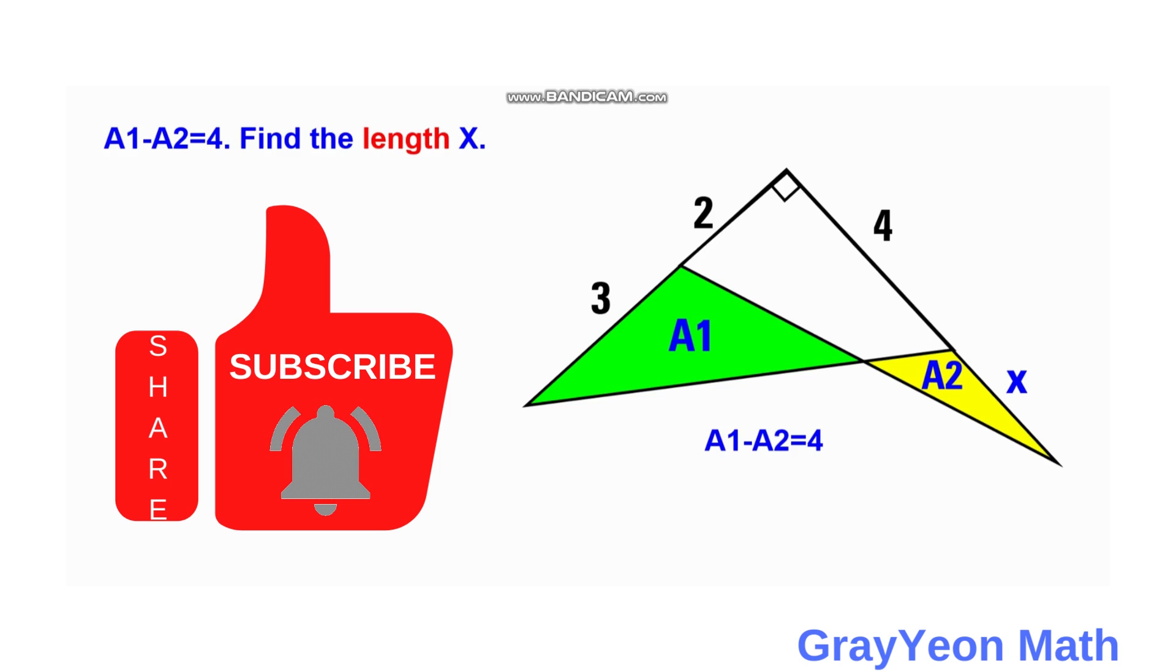Welcome to Gray Yeon Math. We're asked to solve this problem. We have two right triangles that overlap. The regions which do not overlap are called Area 1 and Area 2. The difference between the two areas is given to be 4, and we are required to find the length of X.